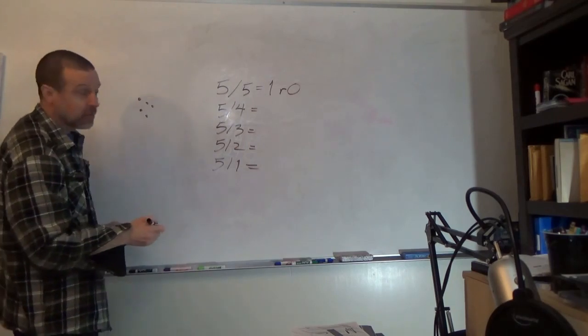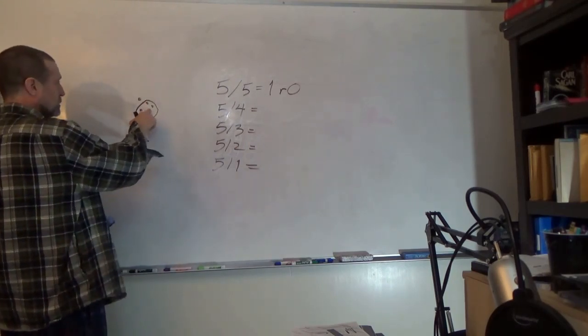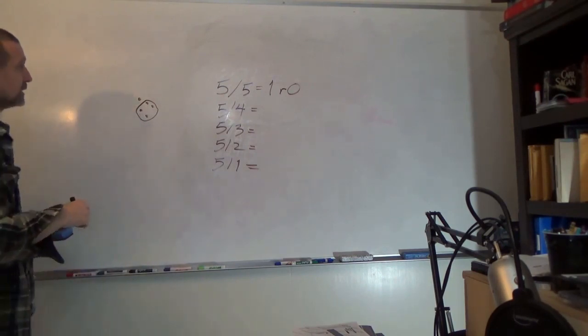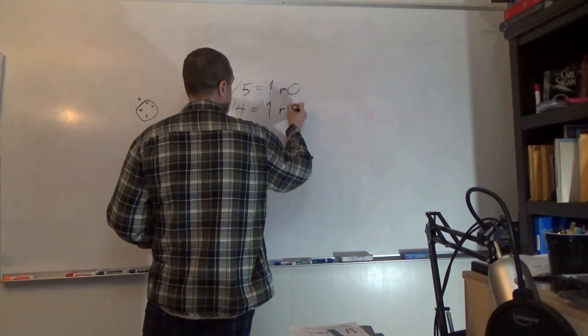5 divided by 4, which is one group, and I've got one remainder. So, 1 remainder 1.